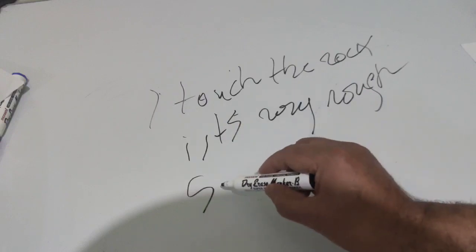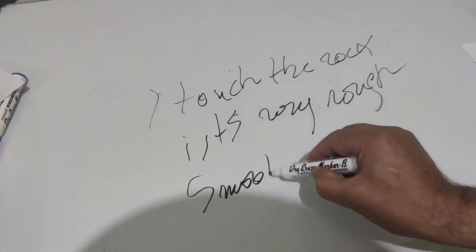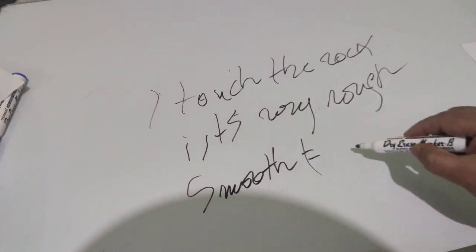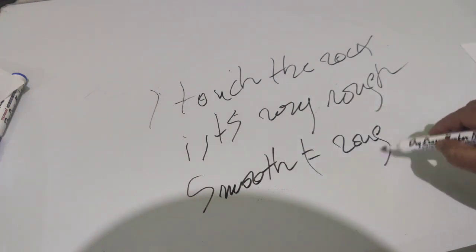Okay. We have smooth, which means soft. And we have rough, which means coarse. Soft versus coarse. These are adjectives in relation with touch. Okay.